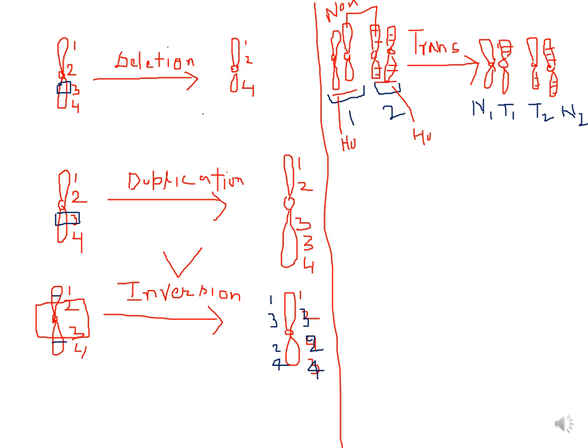The last example is translocation, also known as illegitimate crossing over. Here there are two pairs of homologous chromosomes that are non-homologous to each other. Translocation occurs between these two non-homologous chromosomes, resulting in segments being exchanged, producing structural heterozygotes of translocation.